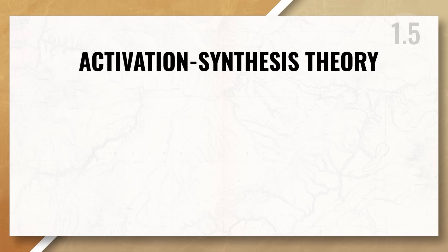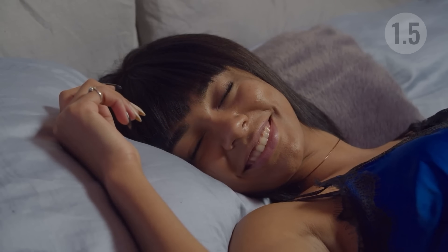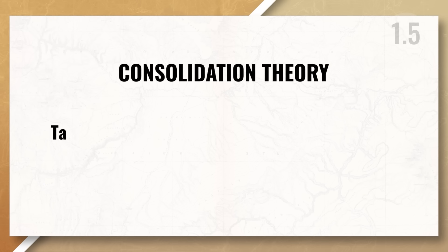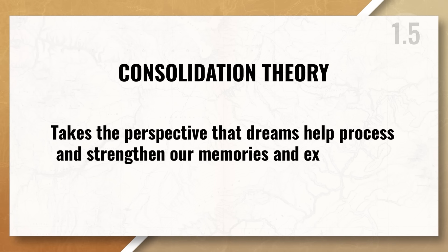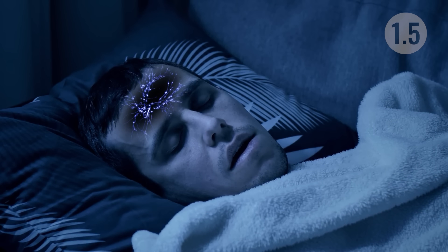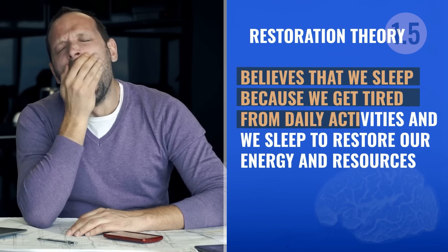There are several theories that seek to explain the purpose of dreams. The activation-synthesis theory takes the perspective that dreams are the brain's way of making sense of random neural activity during sleep — during REM, the brain tries to make sense of this activity by creating a story or dream. The consolidation theory suggests that dreams help process and strengthen memories and experiences — the brain organizes and strengthens connections between neurons related to recent experiences. The restoration theory believes we sleep because we get tired from daily activities and need to restore our energy and resources. Today, memory consolidation and restoration theories are two of the main current theories about why sleep occurs.